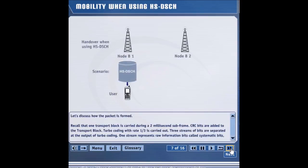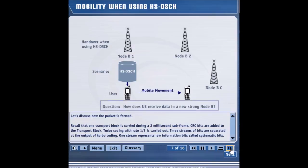Let's look at a handover scenario in an HSDPA system. The UE is getting packets on the HSDSCH from node B A. The UE now moves to the area where node B C is the strongest cell. Now the question is, how will the UE start getting data on the HSDSCH from the new node B C?